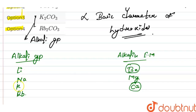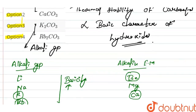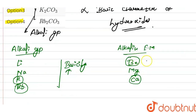On moving down in a group, the basicity increases because the size of the atom increases. So their basicity and hydroxide basicity increases. Beryllium is present at the topmost position in the alkaline earth metal group.